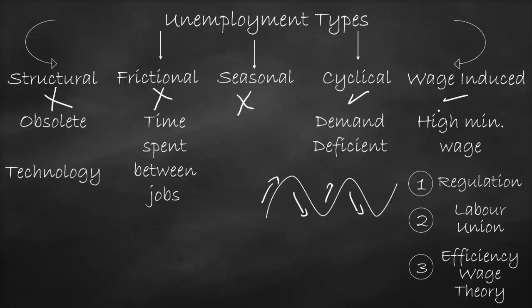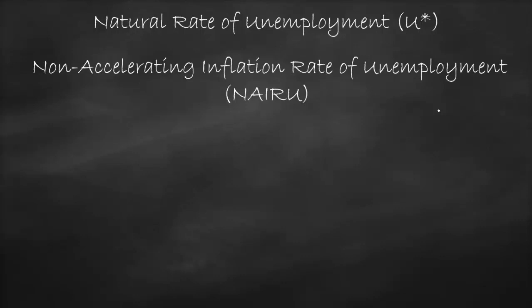Therefore, our unemployment rate would never be zero. So the lowest unemployment rate we would ever have is called natural rate of unemployment. We can also call it non-accelerating inflation rate of unemployment. If you get the first letter of each word, NAIRU. Therefore, natural rate of unemployment, we give it as simply as U*, or NAIRU. This is the lowest unemployment rate we could ever have in any economy, which is equal to three to five percent, and it differs from one country to another.